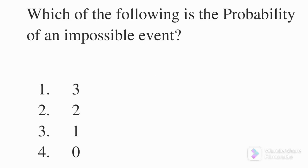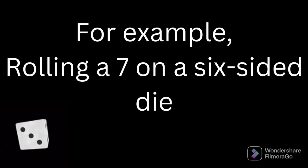Which of the following is the probability of an impossible event. The options are 3, 2, 1 or 0. An impossible event is an event that cannot happen. For example, rolling a 7 on a 6 sided die. We know that a die has 6 surfaces which represents the numbers from 1 to 6. So rolling a 7 on a 6 sided die is an impossible event.